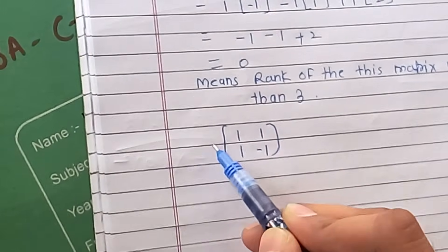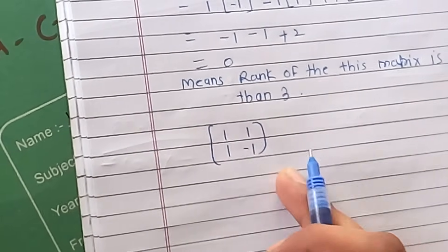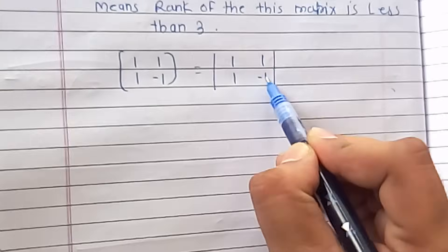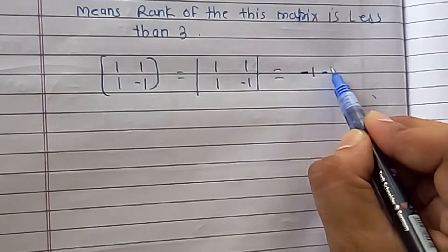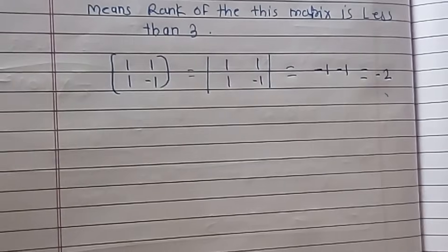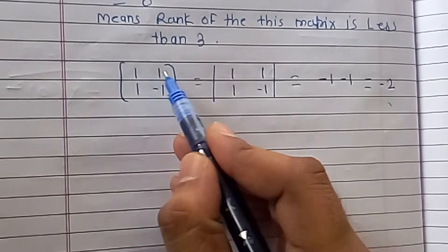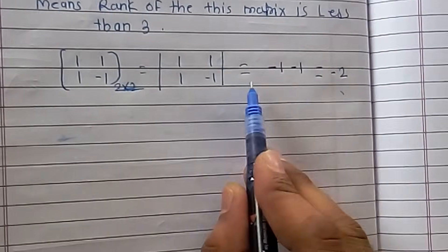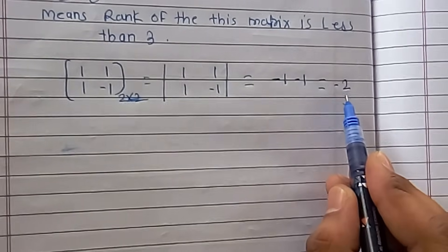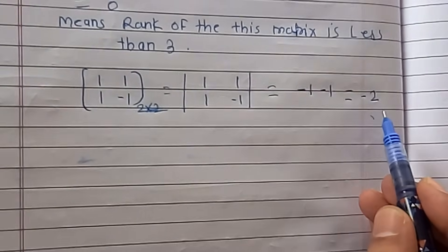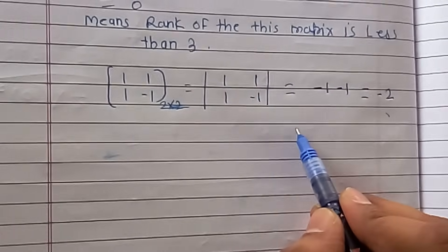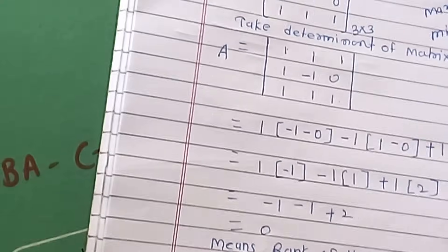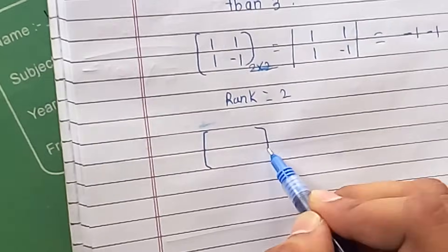We take a 2x2 submatrix — for example, the matrix with entries 1, 1, -1, -1. We find the determinant of this 2x2 matrix, which gives minus one minus minus one, equal to minus two. This is a non-zero value, which means the rank of this matrix is two.